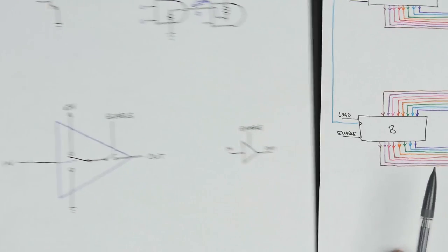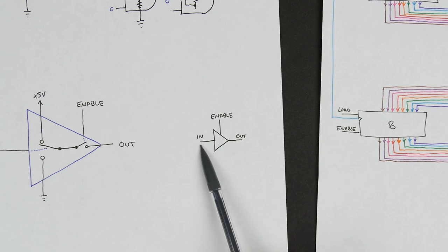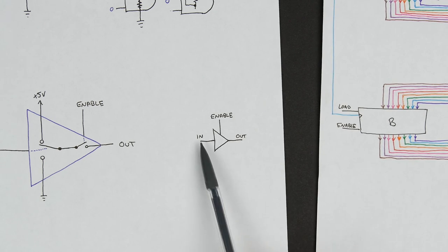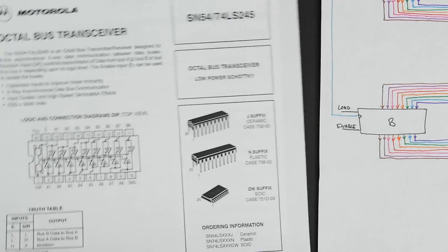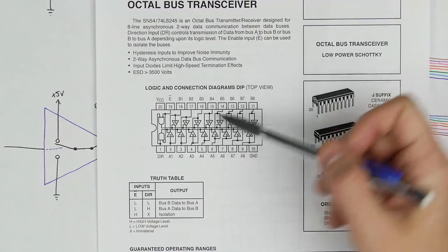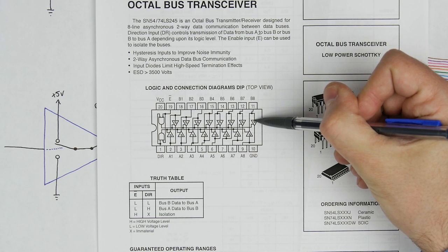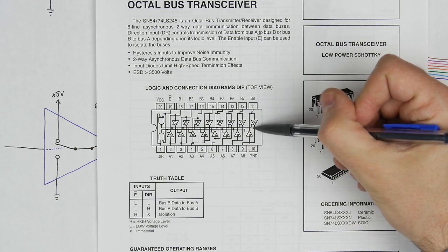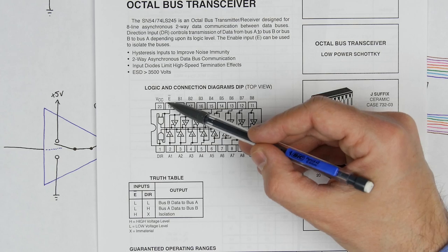This is considered a three-state gate. This is a pretty common symbol for such a thing: you have an input — it's just a buffer, an input and an output — but then you have this enable coming in the side. An example of this that we'll use in our registers is the 74LS245. You can see it's got a bunch of these gates in here. You have an input that comes in and then an output that goes out, just like any buffer, but you have this third enable pin. There's a little bit of logic here, but essentially you have an enable input — that's this E input.